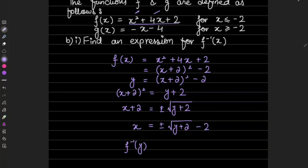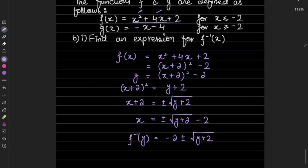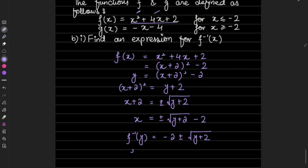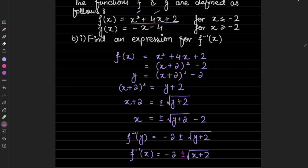So f⁻¹(y) = −2 ± √(y + 2). Interchanging the variables: f⁻¹(x) = −2 ± √(x + 2). This is all the working, but there is one more thing to do — out of this plus and minus, we have to decide which one is the right one for f inverse.